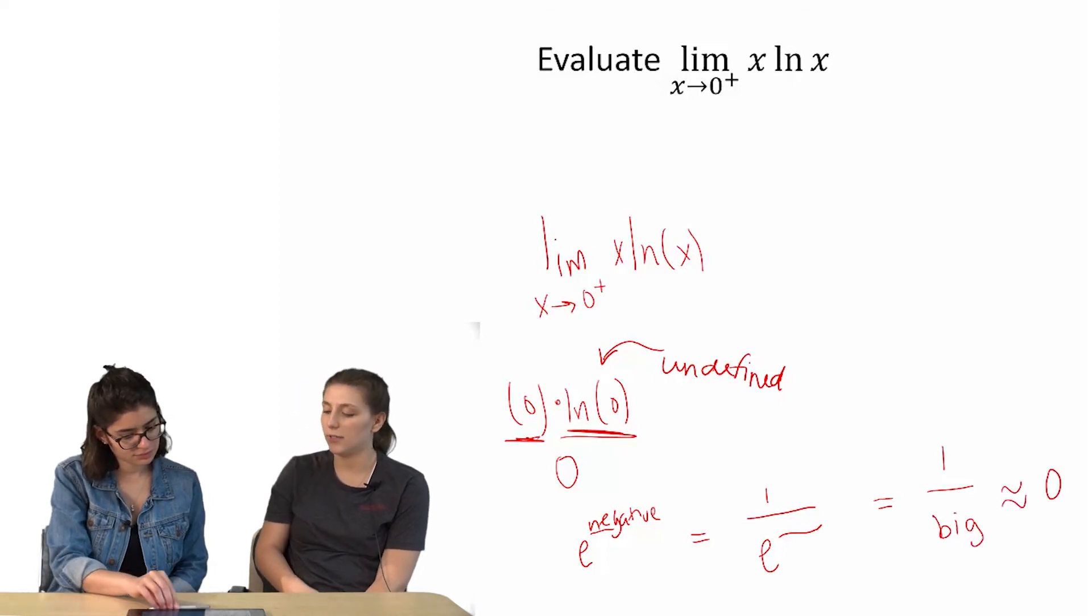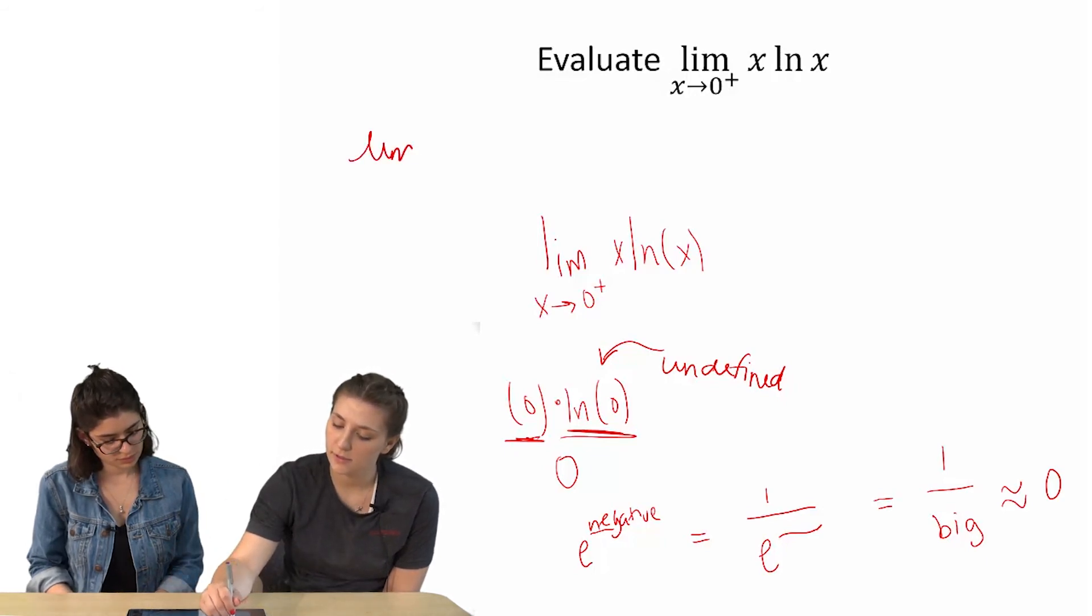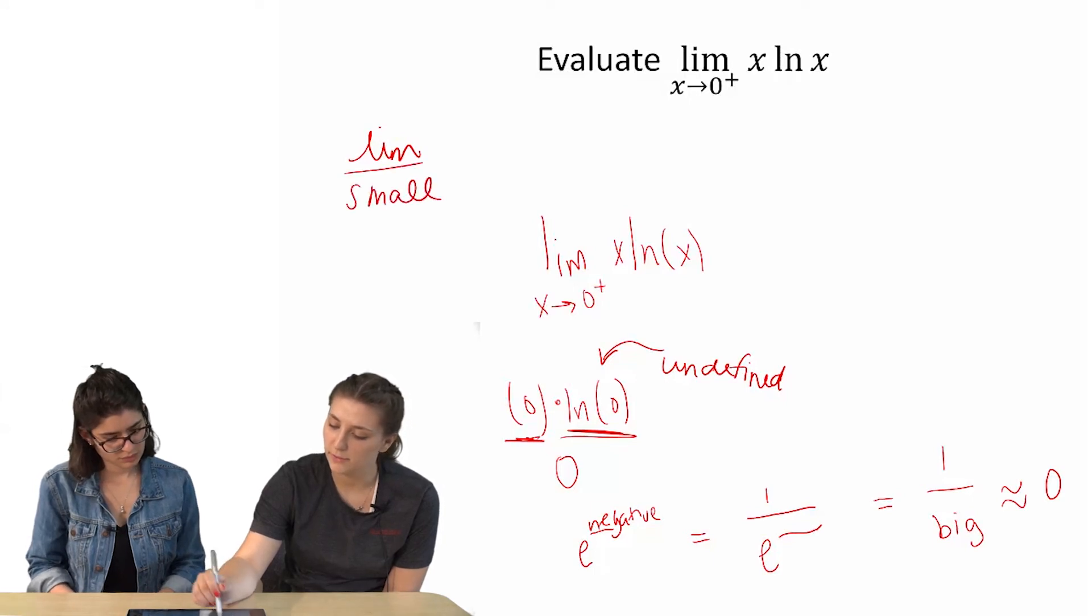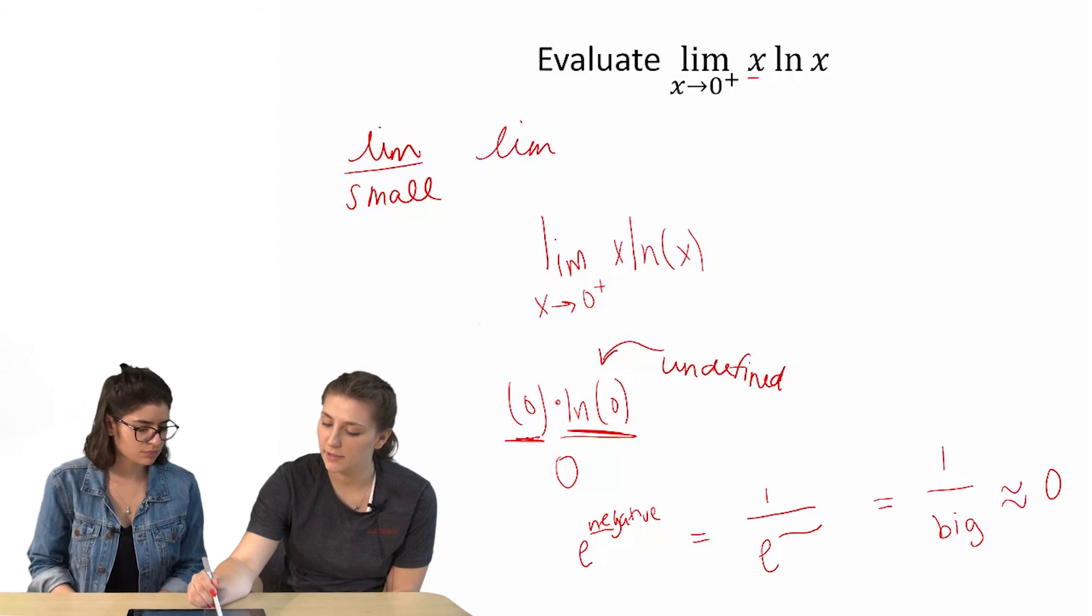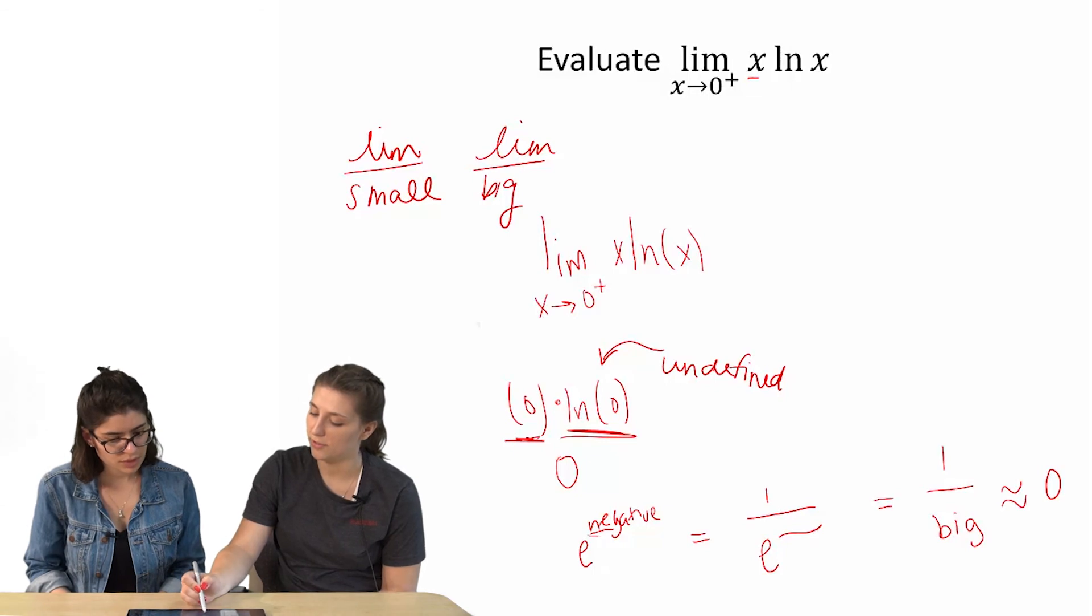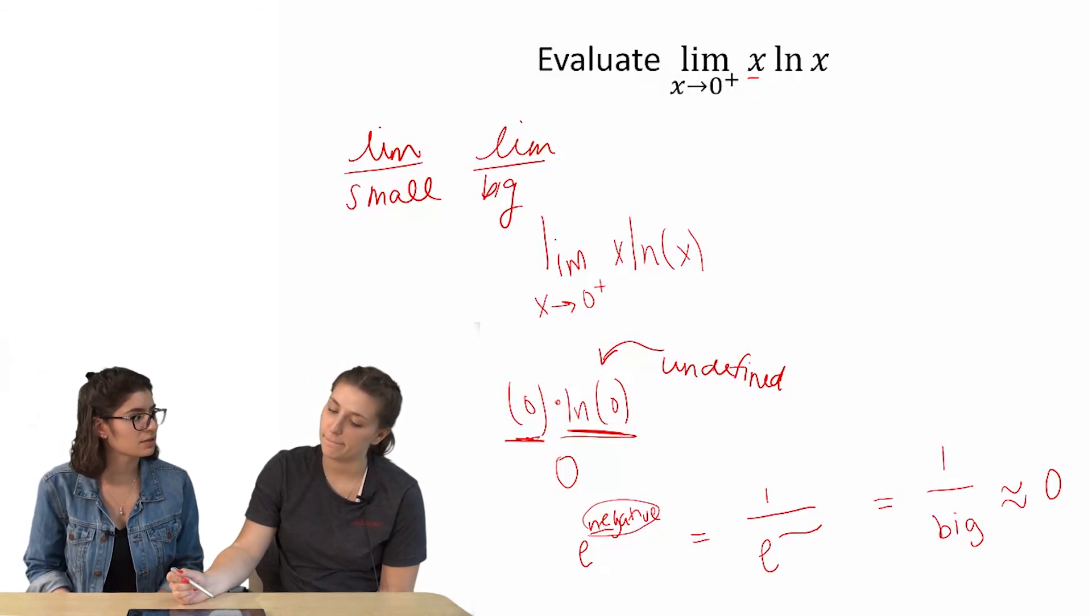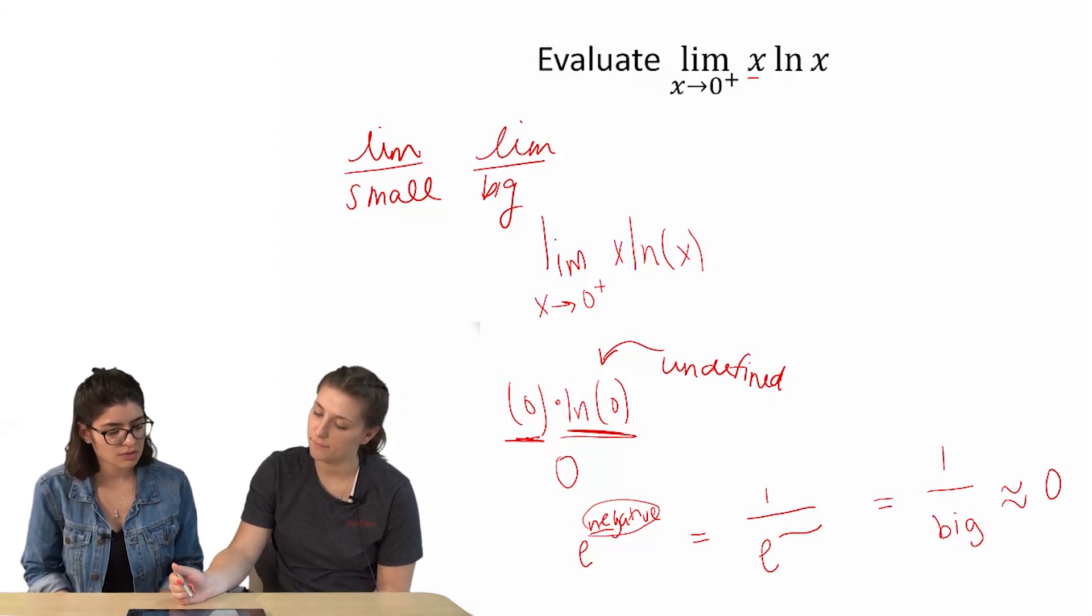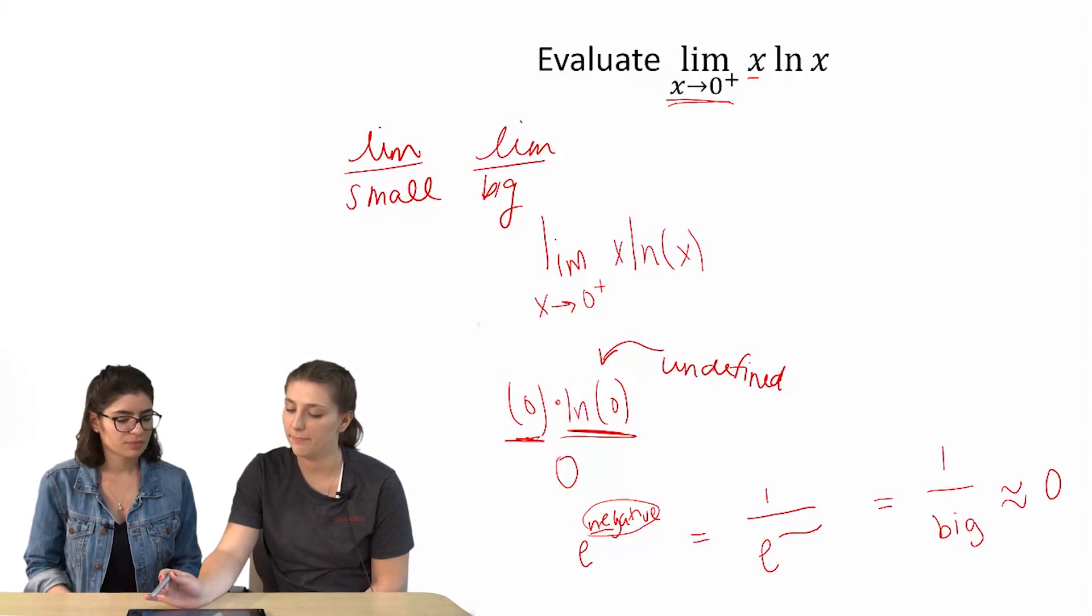So you're saying we're taking the limit of something small, which is zero, and then the limit of something big, because we know that this is some really large negative number. I feel like the limit of natural log of x is definitely something really big. And you're saying the limit of just x is small? Yeah, as x approaches zero, because it would just be zero.